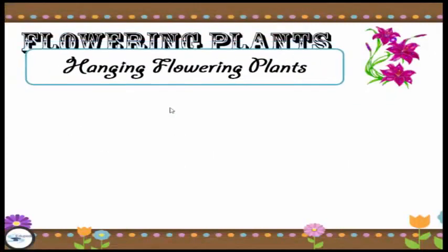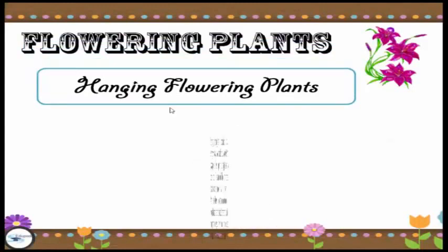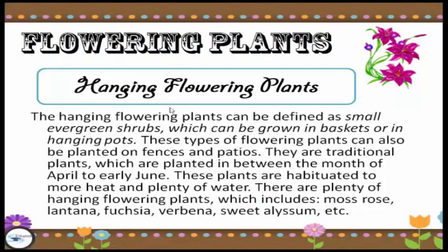Next, we consider the hanging flowering plants. Hanging flowering plants can be defined as small evergreen shrubs which can be grown in baskets or in hanging pots. These types of flowering plants can also be planted on fences and balconies. They are traditionally planted between the months of April to early June and are habituated to more heat and plenty of water. There are plenty of hanging flowering plants like moss rose, lantana, fuchsia, verbena and sweet alyssum.